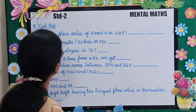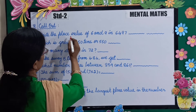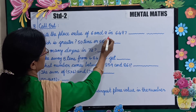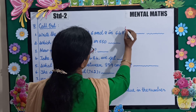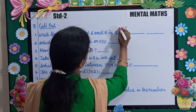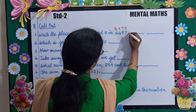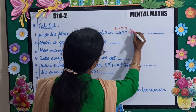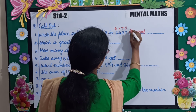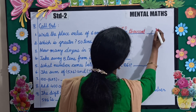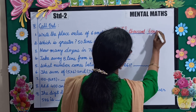Next topic is call out. Number 1: write the place value of 6 and 9 in 6497. The place values are: 1s, 10s, 100s, 1000s. So 6 is in the thousands place — its value is 6000 — and 9 is in the 10s place, so you will write 10s.